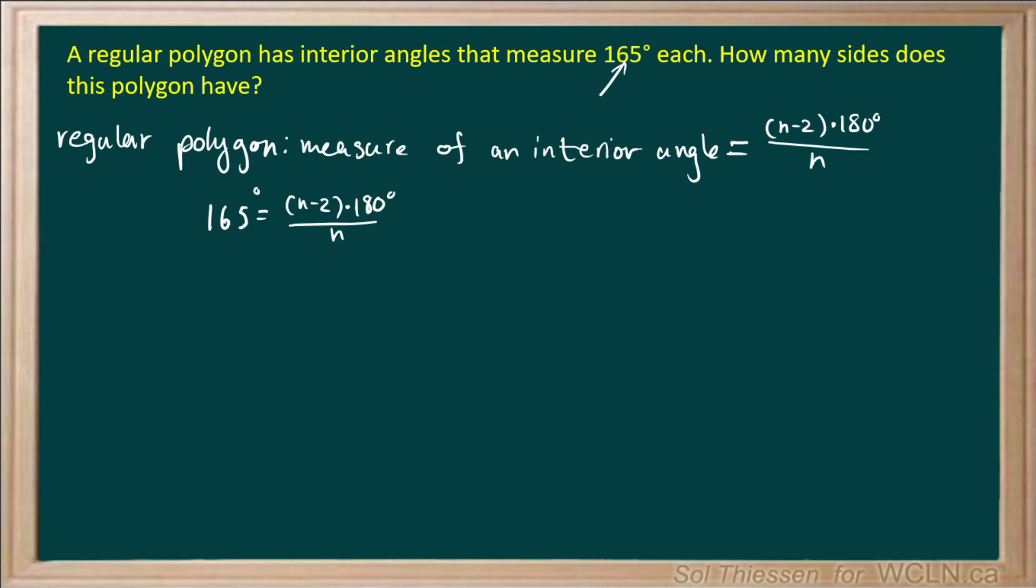So the first thing I want to do is cross multiply here. We're going to multiply both sides by N. Keep in mind that there are many ways, or many different steps that you could take to solve for the value of N here. I'm just going to show you one possible solution.